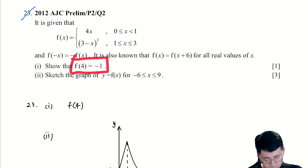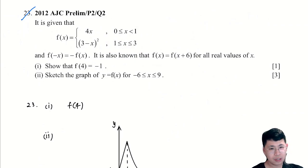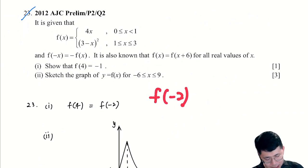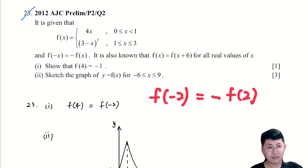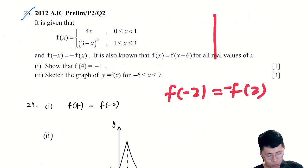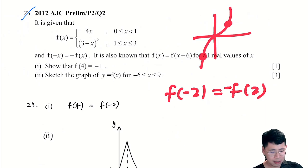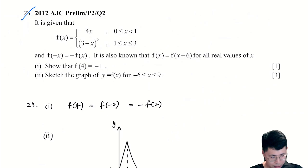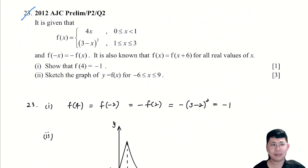We are going to show that f(4) = −1. f(4) is not within the domain 0 to 3, so we use the periodic function concept: minus 6 gives us f(−2). Now f(−2) is interesting because this is an odd function. Using the odd function property, f(−2) = −f(2). We substitute 2 into the second piece, 3 − x², which gives 3 − 4 = −1. So f(4) = −1.